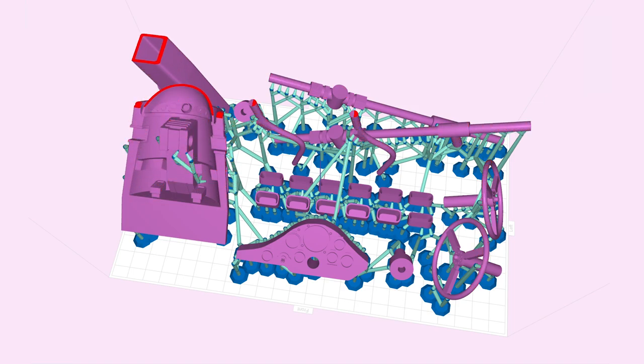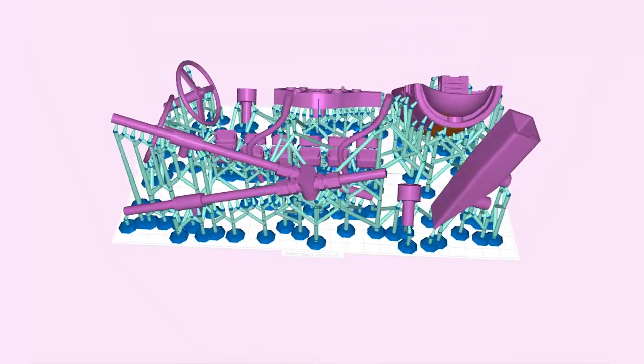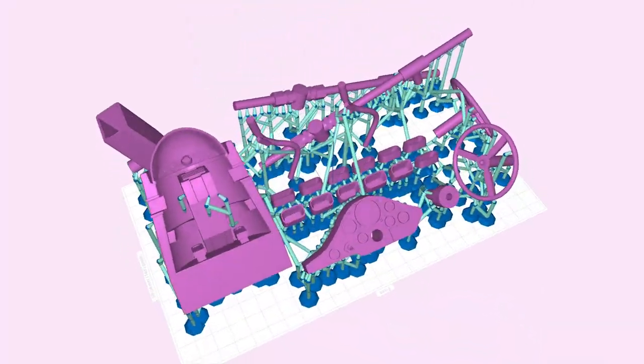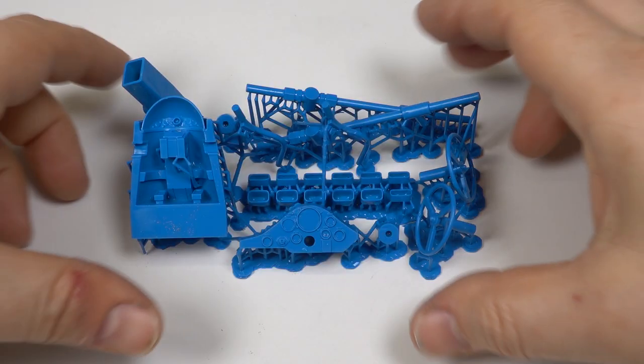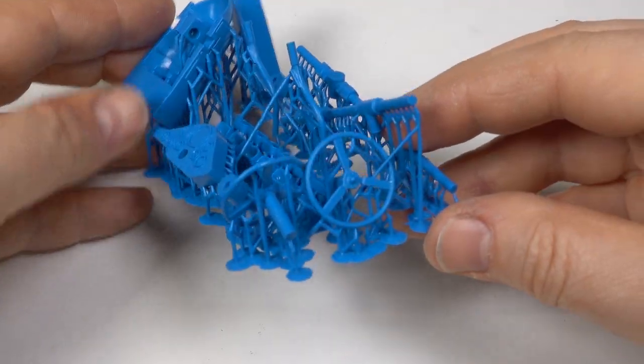This was much better for the fine detailed parts where my Ultimaker was better suited to the larger simpler parts. As ever the resin parts came out well and just needed removing from the supports before gentle cleaning up with small files.